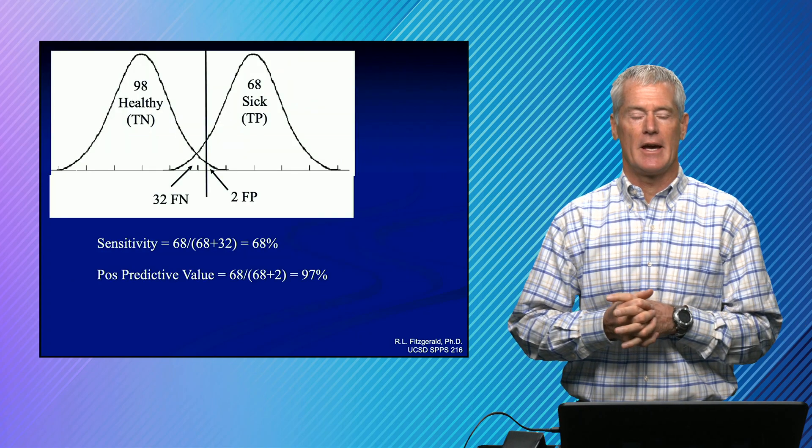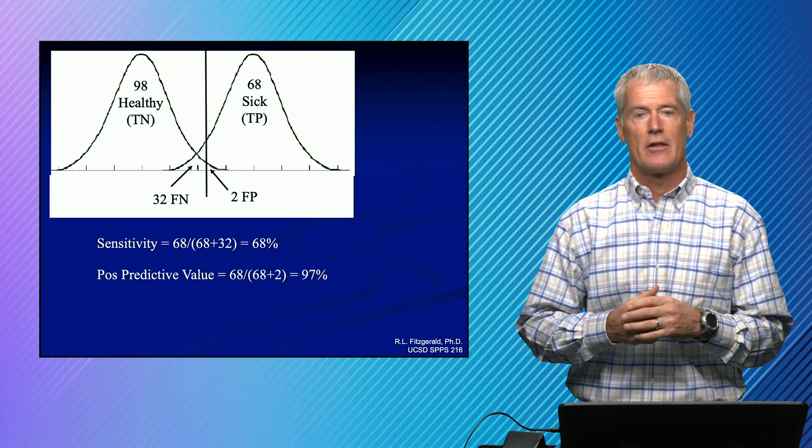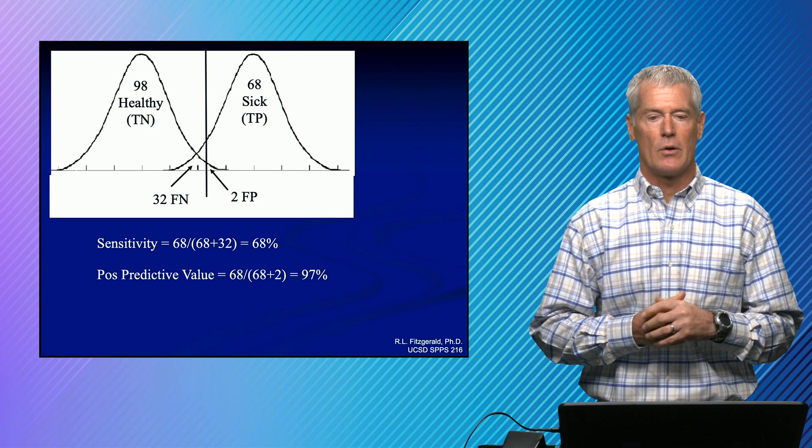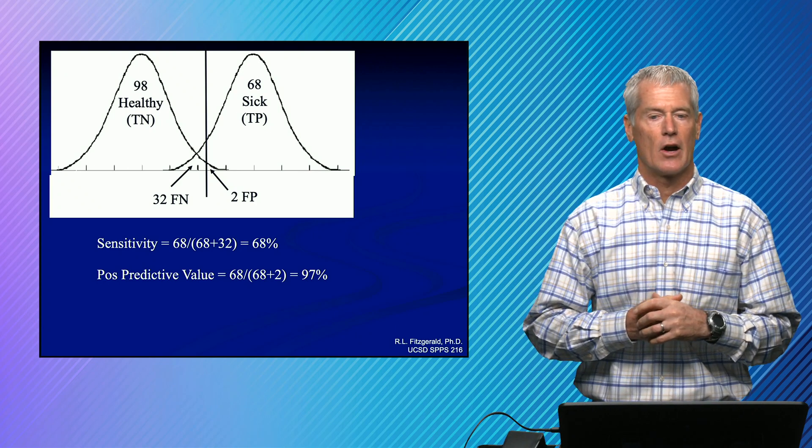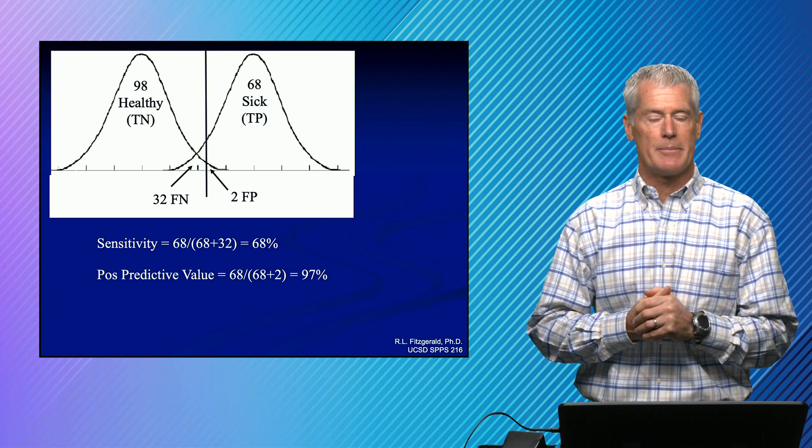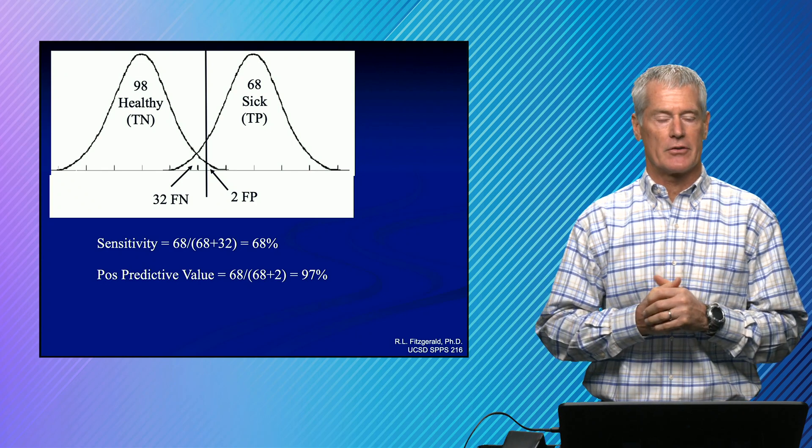So let's look at an example. So we have two populations, a healthy population and a diseased population. There happens to be a hundred people in each of these populations. And if we do our calculation for sensitivity, our true positives, 68 over all that should be positive, that would be the true positives plus the false negatives, we get 68 percent.